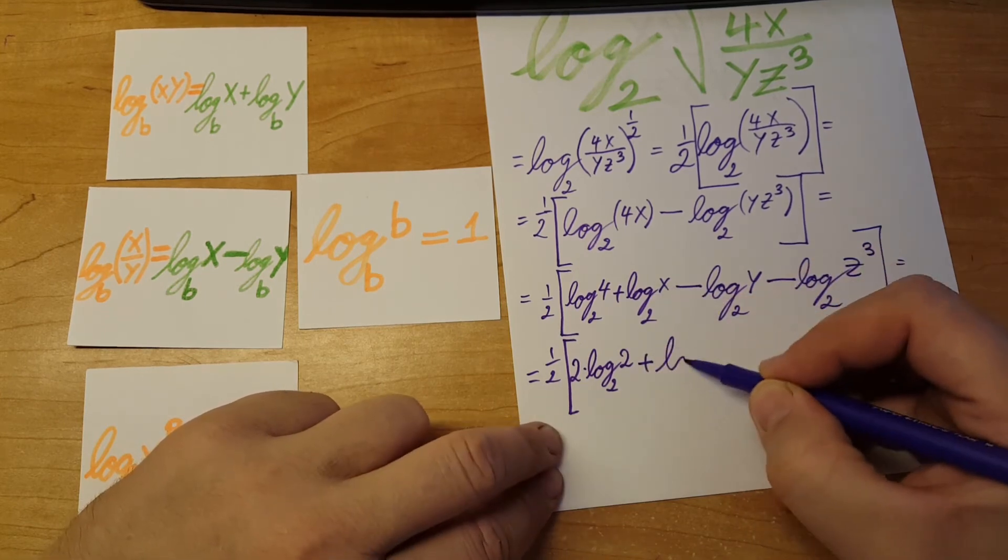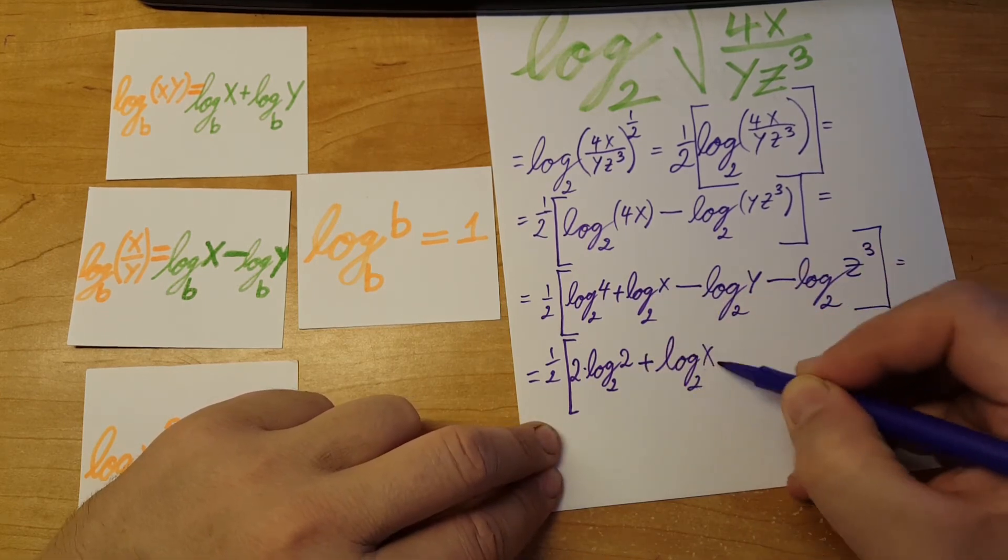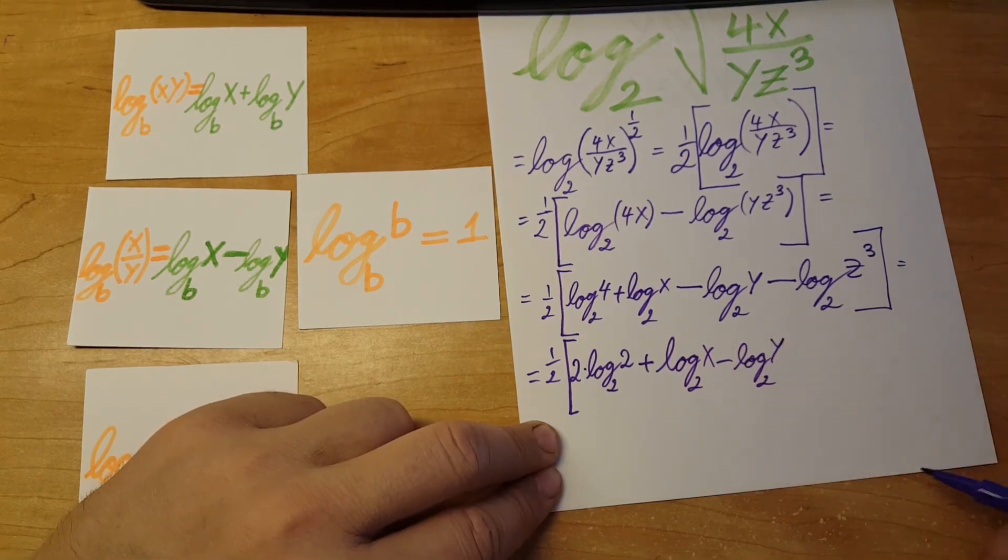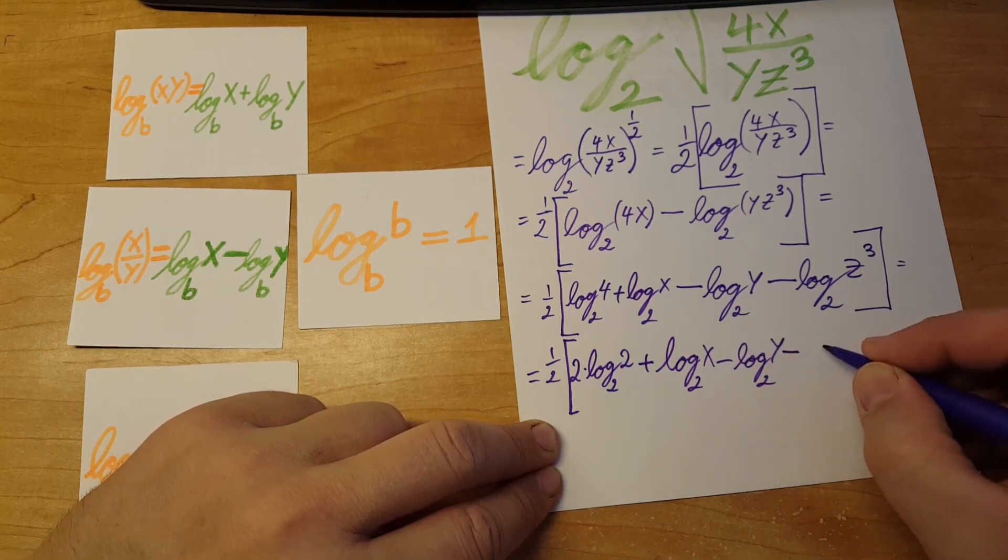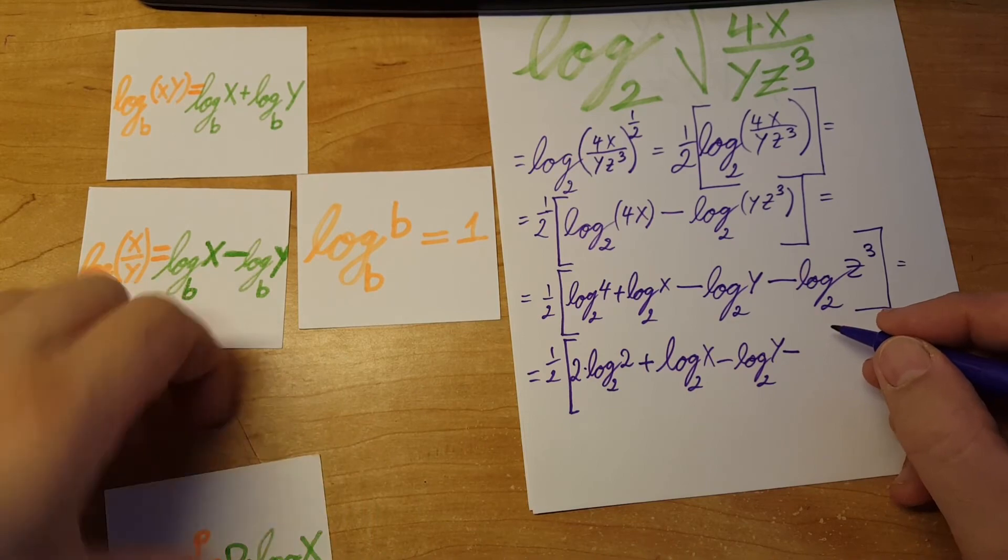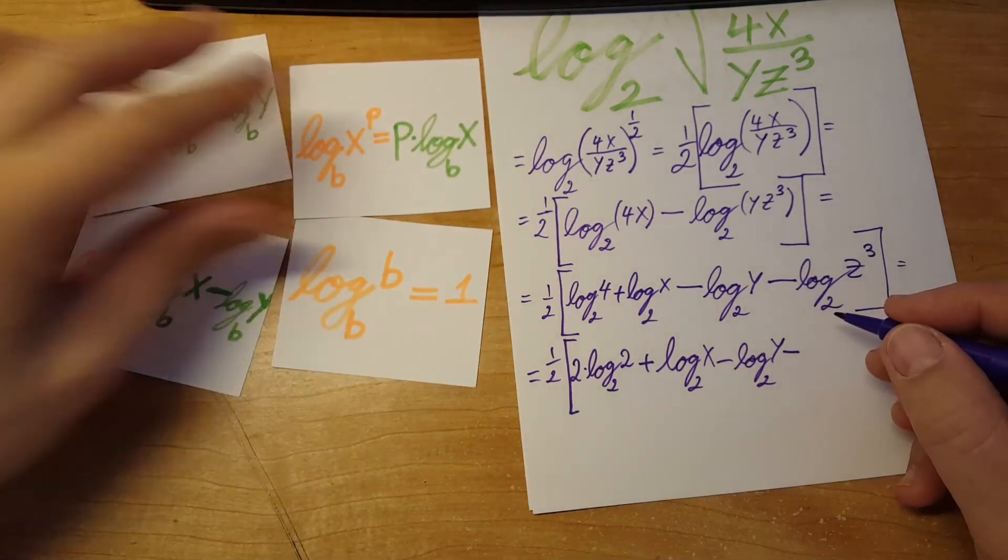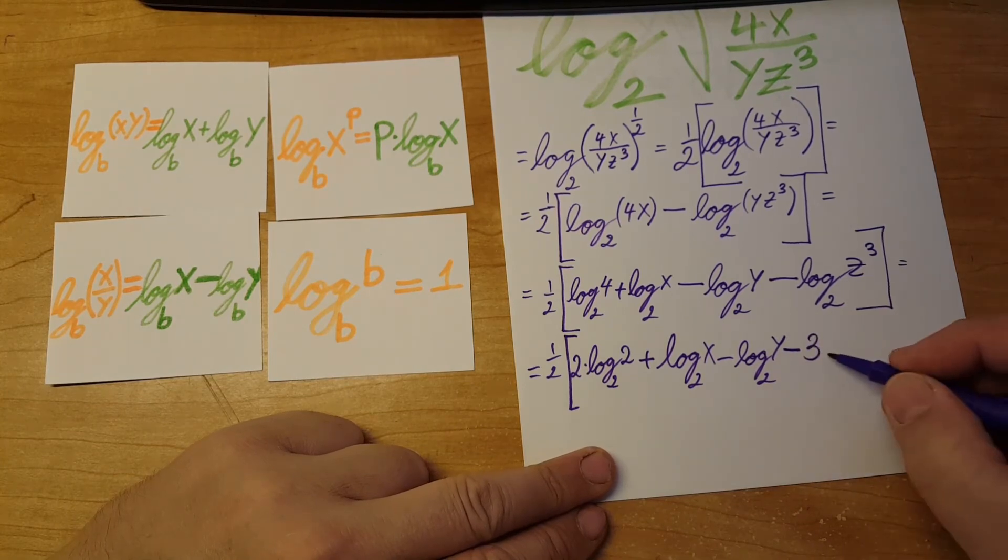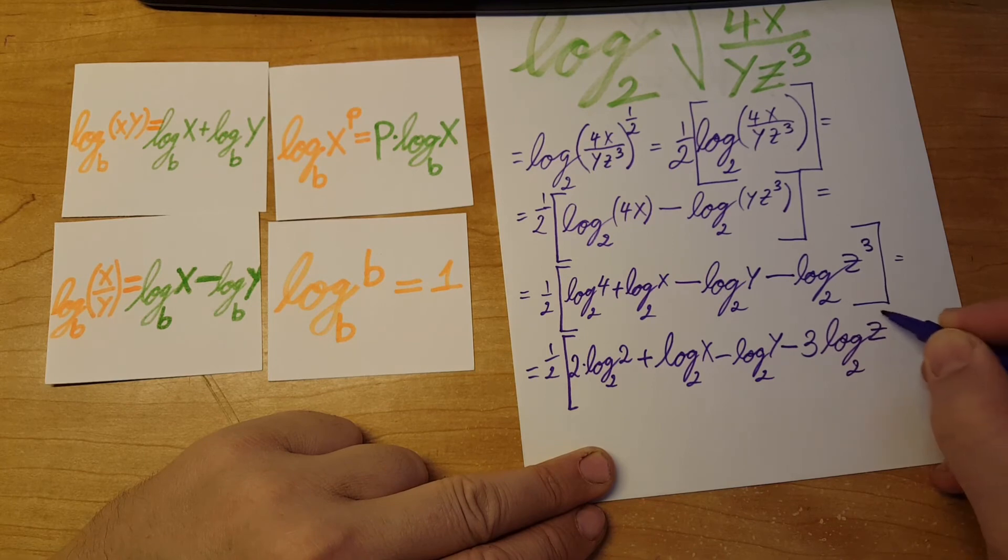This one stays log base 2 of x minus log base 2 of y. And here we're going to use the power rule: minus, the 3 comes down in front. Here's the power property: 3 in the front, log base 2 of z.